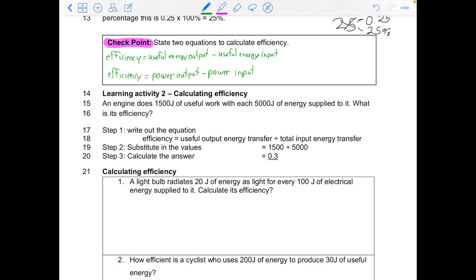Here are the two equations: efficiency equals useful energy output divided by energy input, or efficiency equals power output divided by power input. If you've added times 100% to the end of each of these, that is completely fine — you can still have it correct. Make sure you have that written into your books, correcting it with your feedback color pen if needed.